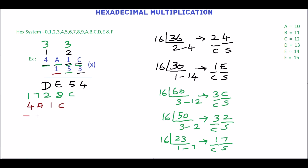Now we will add the partial products. Next add 5 and C. C is equivalent of 12. 12 plus 5 is 17. 17 is not a hex number. The equivalent hex number is 11. In this, 1 is the sum and 1 is the carry. Write sum here and carry 1.